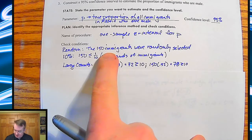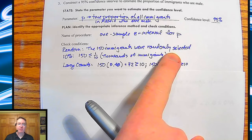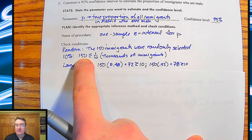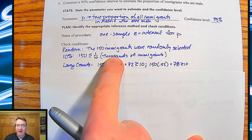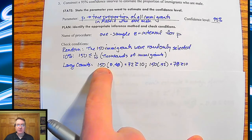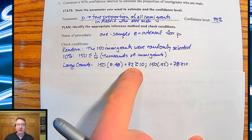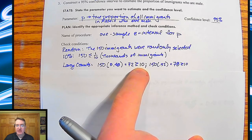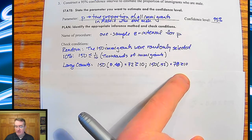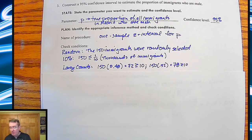So is it random? The 150 immigrants were randomly selected. 10%, 150 is definitely less than or equal to one-tenth of the thousands of immigrants that had moved into Madrid at that point. And large counts are you're going to go 150 times 48%. So 72 is bigger than 10. And then 150 times the not P value, 78. And that's definitely bigger than 10.